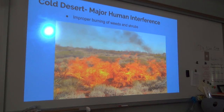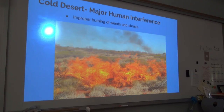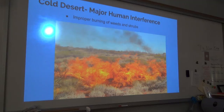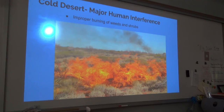The largest human interference in the cold desert biome is excessive and improper burning of weeds and shrubs. This creates a cause-and-effect change within the ecosystem, as shown through a study by the Snake River Birds of Prey National Conservation Area. The study revealed that improper burning destroyed the homes of numerous ground squirrels, which in turn lowered the population of birds of prey in the area.